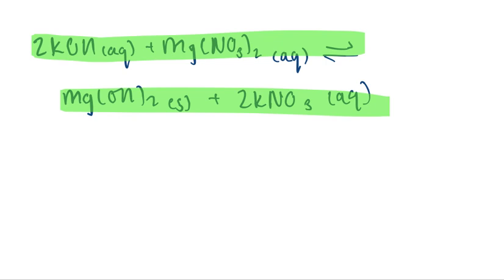In this reaction, the precipitate is magnesium hydroxide. Potassium nitrate readily dissociates in water to ions. However, magnesium hydroxide forms a white solid, commonly known as milk of magnesia.